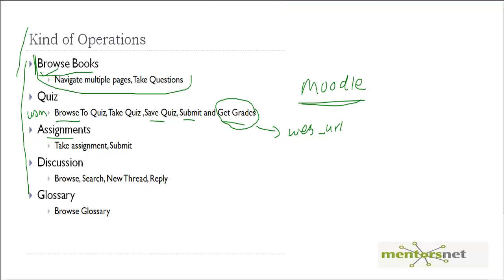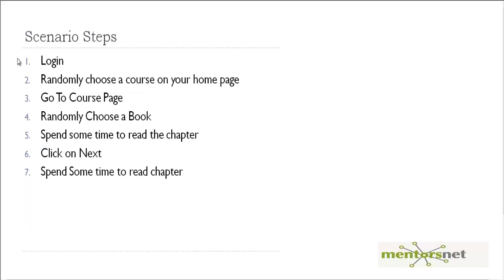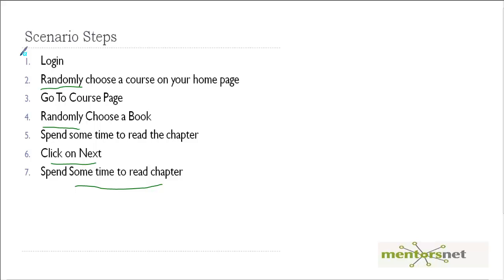In this video we are taking care of these scenario steps. When a user comes in to read a book, he has to login, then randomly choose a course on the home page — remember a user might be enrolled in multiple different courses. Then go to the course page, randomly choose a book, spend some time reading a chapter, then click next page and read another chapter. These are the seven steps required.